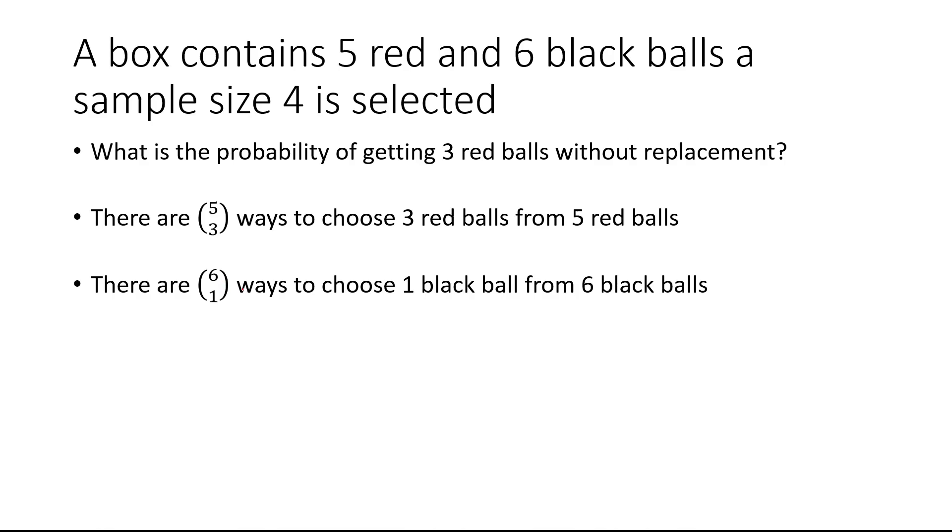That's six choose one ways to select one black ball. The total ways to select four balls out of eleven is eleven choose four. So we multiply and divide: five choose three for the three red balls, times six choose one for the one black ball, over the total which is eleven choose four. That simplifies to two over eleven.